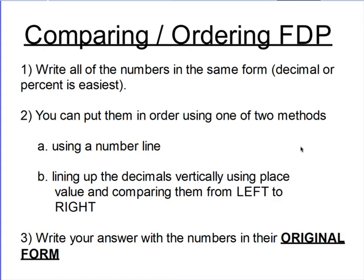What you have to do for either method is write all of your numbers in the same form. If I give you a handful of fractions, decimals, and percents, I'm going to recommend that you make them all either into decimal form or percent form. You can make them fractions and compare all of the fractions, but you would need to make common denominators for all of them, which could end up being quite a bit of work. When you write your final answers, you have to write the numbers in their original form — don't leave them all as decimals or percents. Put them back the way they originally were.